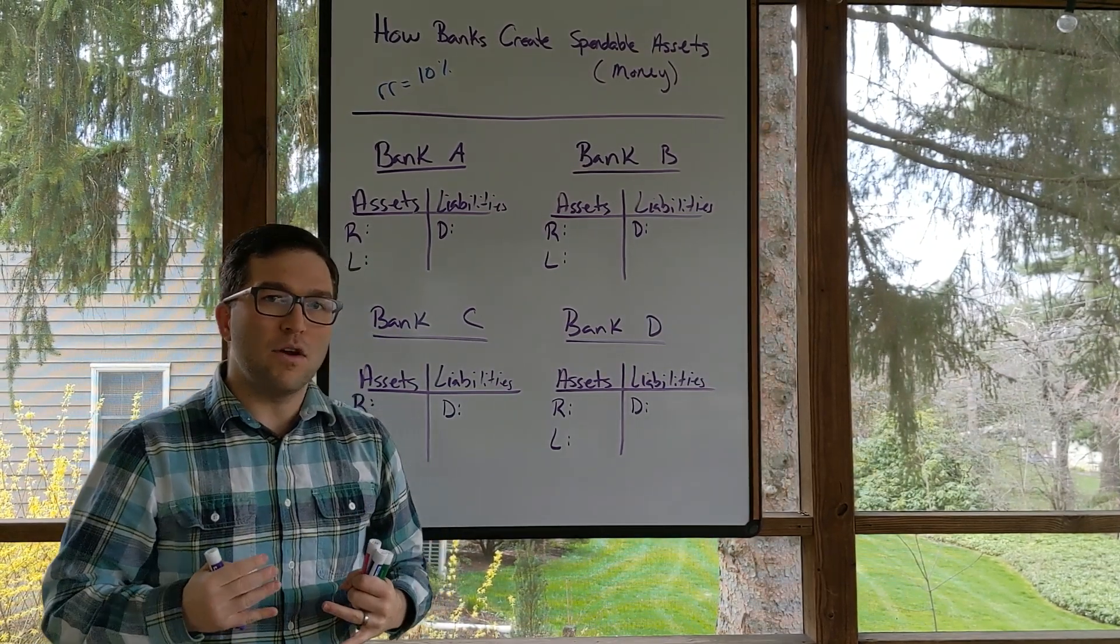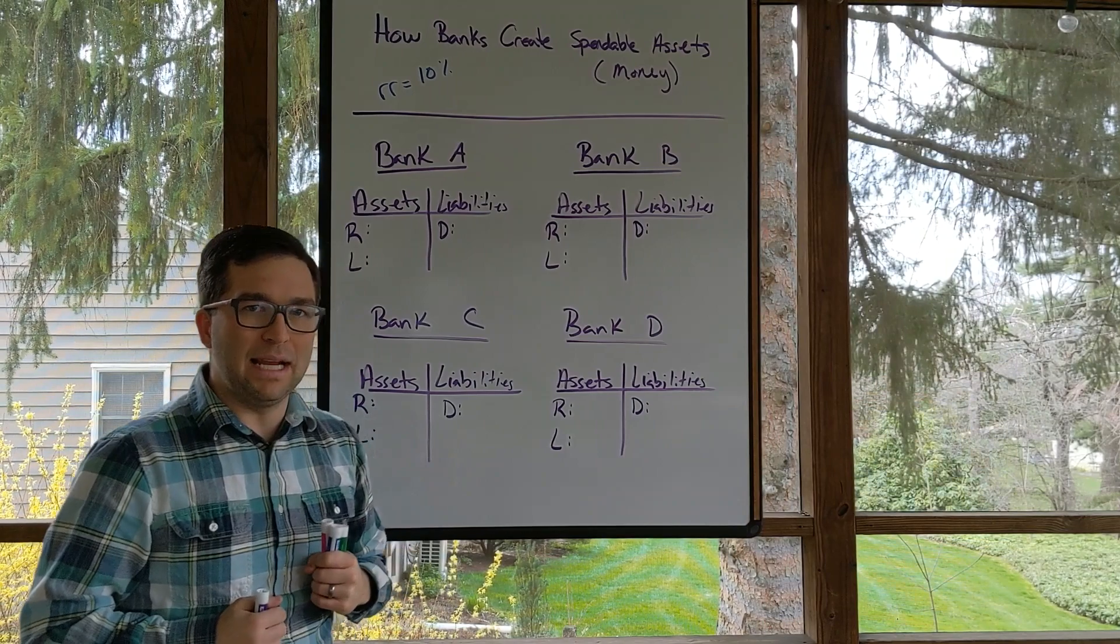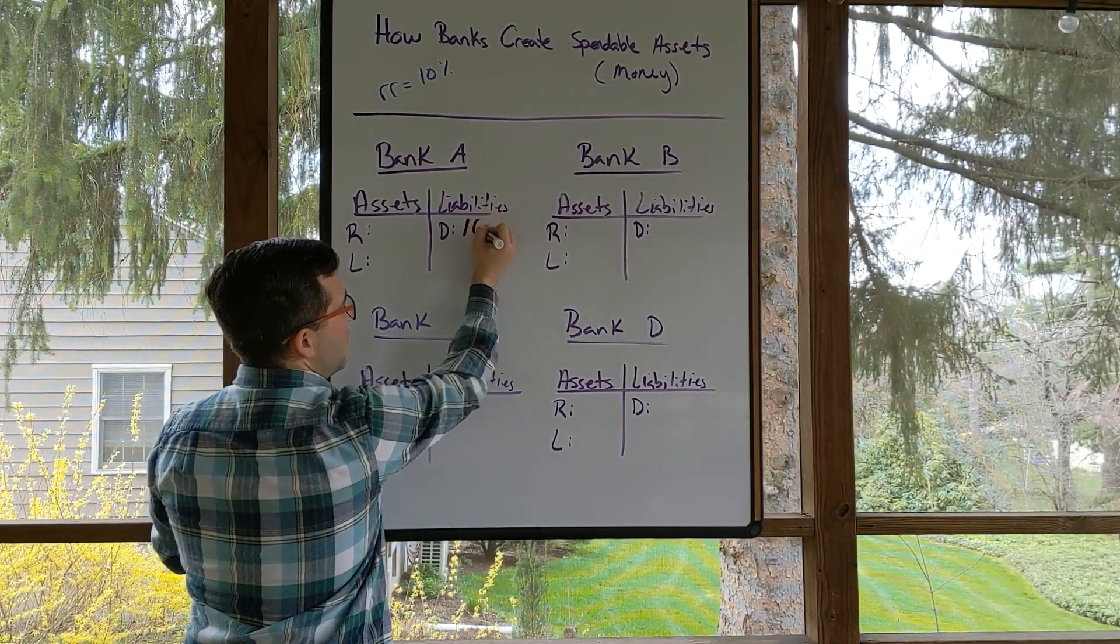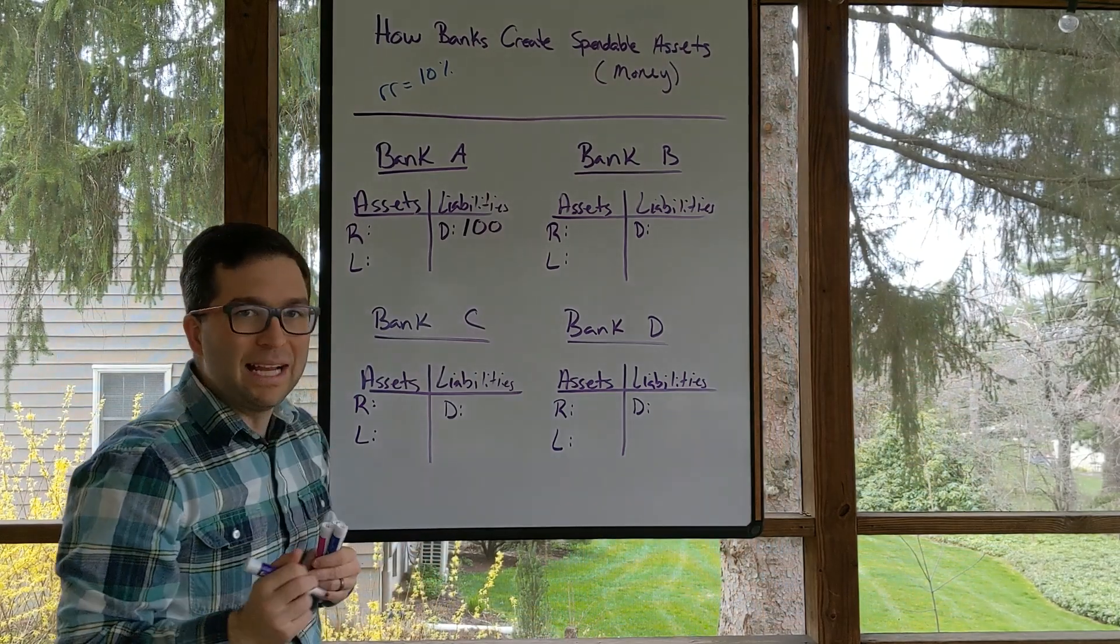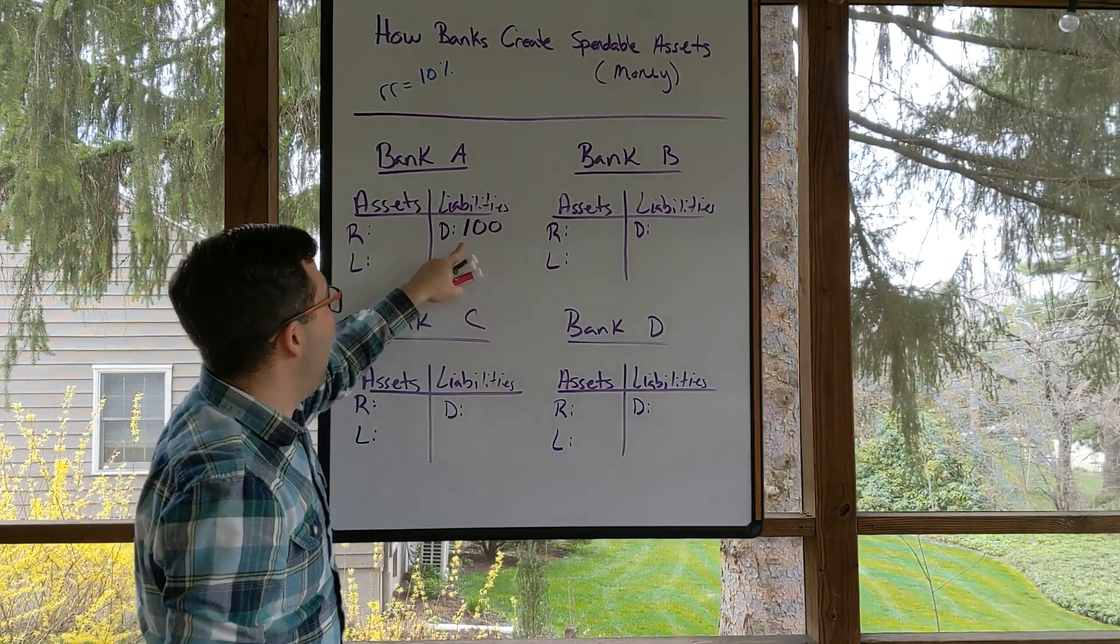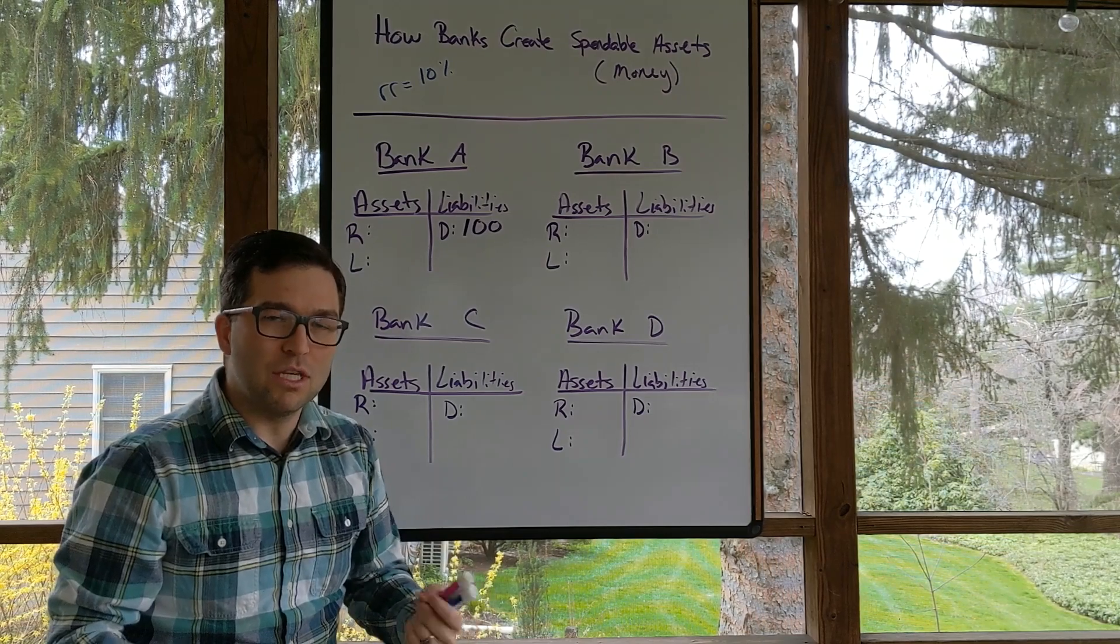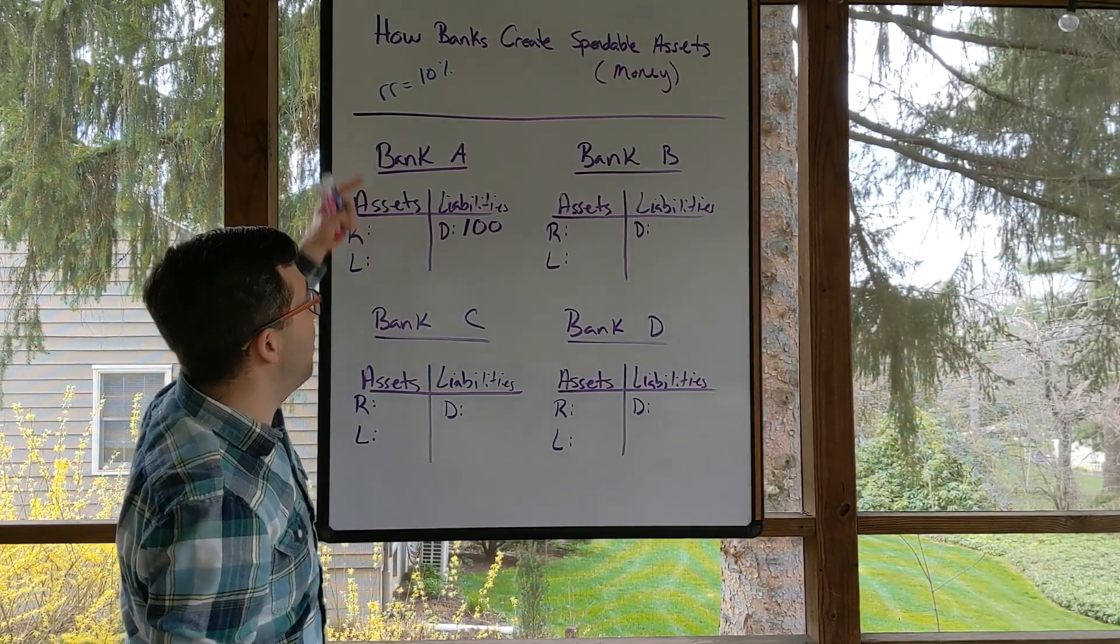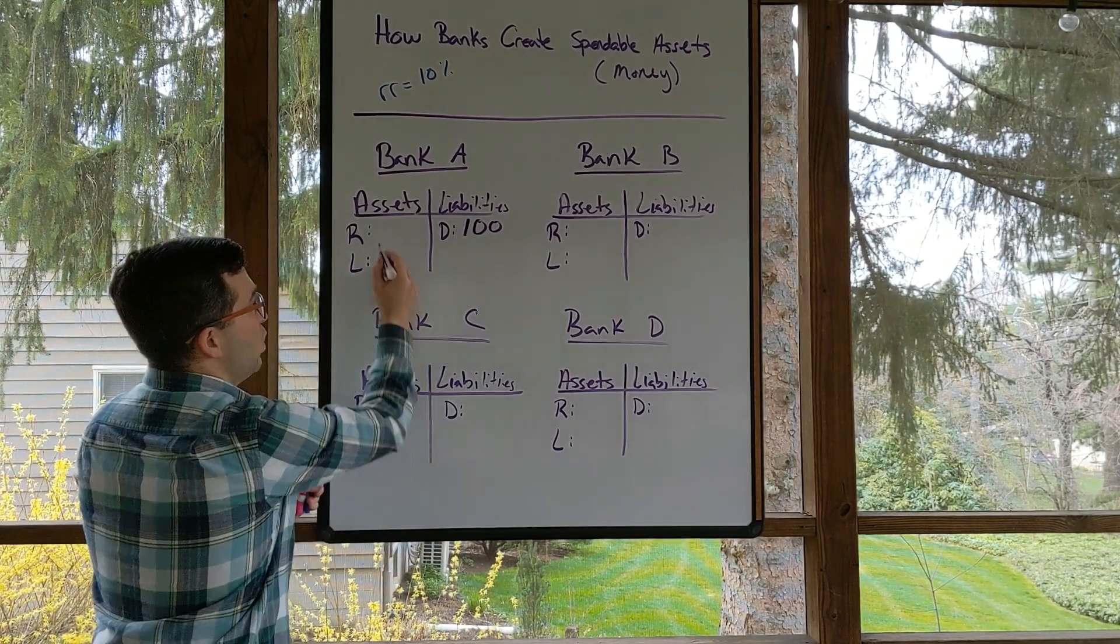Let's say that there's a $100 initial deposit into Bank A. So let's do that. $100 goes into Bank A. That bank is going to have to do something with that $100. If we're assuming that they're only holding the required reserves, 10% of that's going to go into reserves, which would be $10.